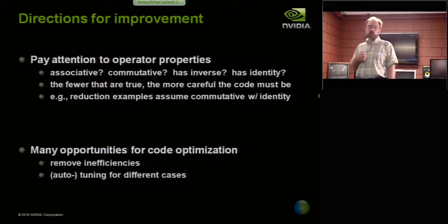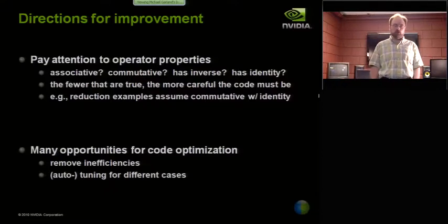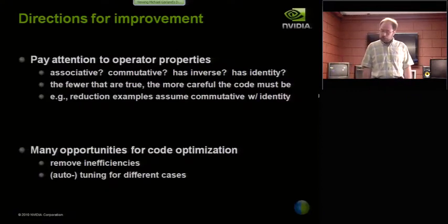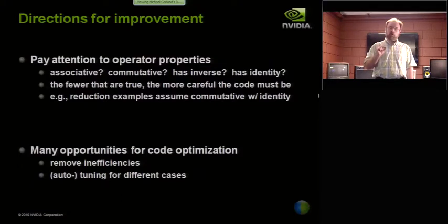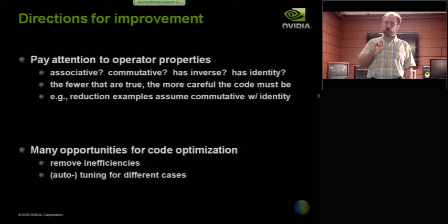I told you that I assumed that it was associative and commutative. I also happened to assume it had an identity because, if you noticed, there was a previous slide that said sum equals zero. In fact, I assumed it has an identity zero. And you need to be careful about that because the fewer of those that are true, the more careful you have to be about the way you write the code. Writing prefix sums, where you only assume the operator is associative and you don't assume it has an identity, is harder than writing a summation kernel where you assume it's commutative, the identity is zero, and it has an additive inverse, I would argue.